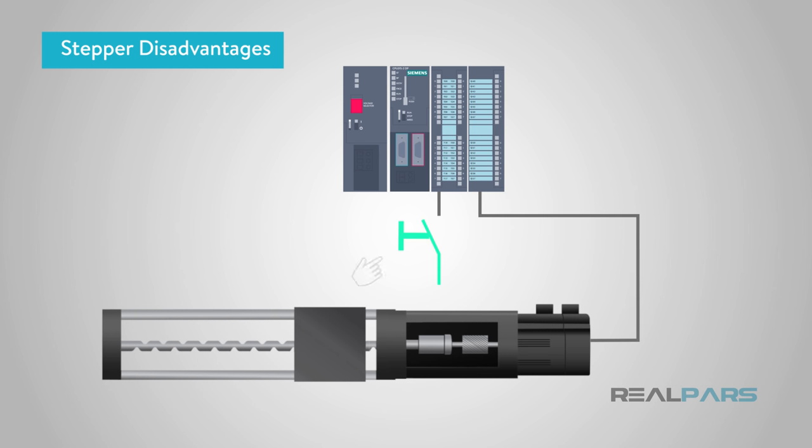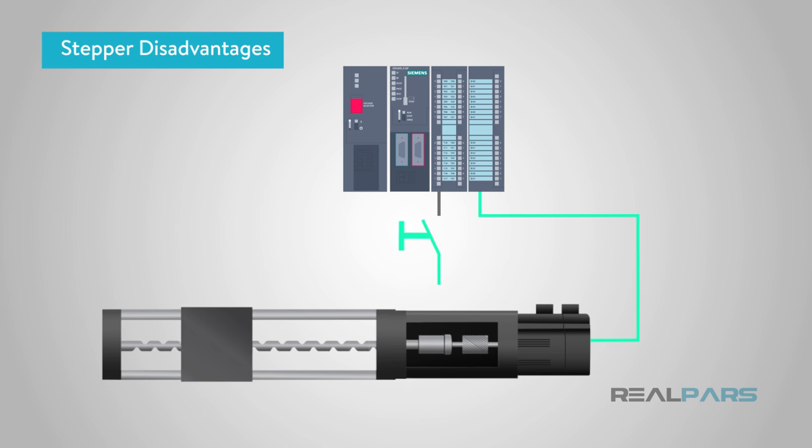Stepper motors have low torque to inertia ratio, which means they cannot accelerate loads very rapidly, and the motor can get very hot in high-performance configurations. Stepper motors can be audibly very noisy at moderate to high speeds, and have low output power for size and weight.